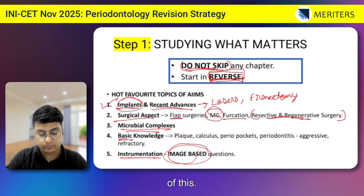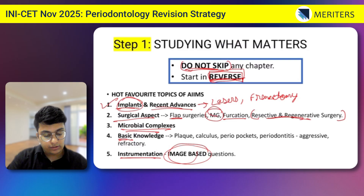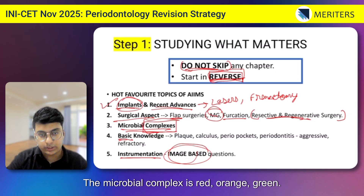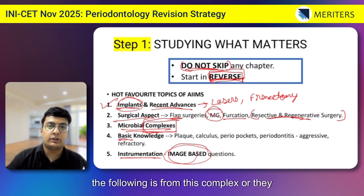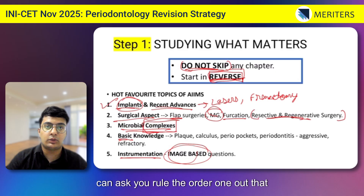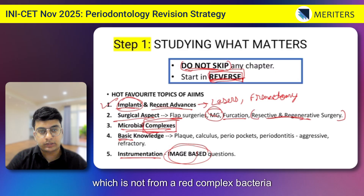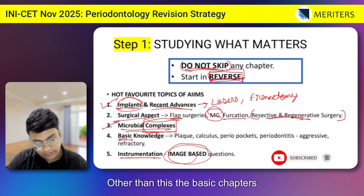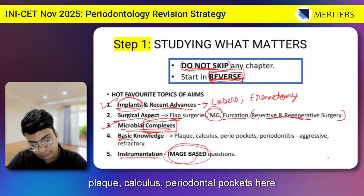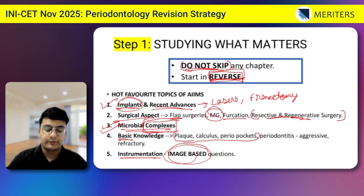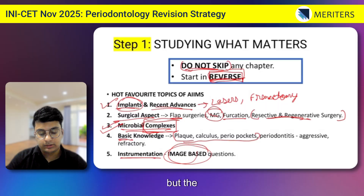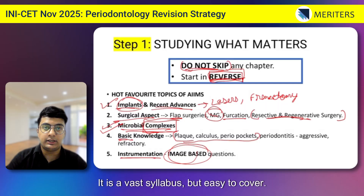Mucogingival surgery is also part of this. A very important set of questions in AIIMS exams — usually in every INI CET — will include one or two questions from the microbial complexes: red, orange, and green. They will ask which organism belongs to a complex, or ask you to rule out the odd one out. This table is a must for AIIMS. Basic chapters like plaque, calculus, and periodontal pockets are also asked — very straightforward things like composition or how many days it takes for calculus to calcify. Perio is all about easy things, but the topic coverage is vast.